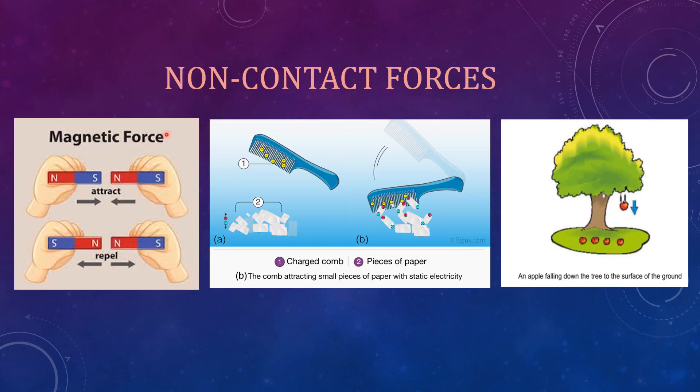Non-contact force. Magnetic force. The force exerted by a magnet on other magnet or some other magnetic substances like iron is called magnetic force. In this diagram, we have taken two magnets, north and south poles. We are kept opposite to each other, south and north. That means they are attracting each other and in this, both the poles are same and it is repelling each other.